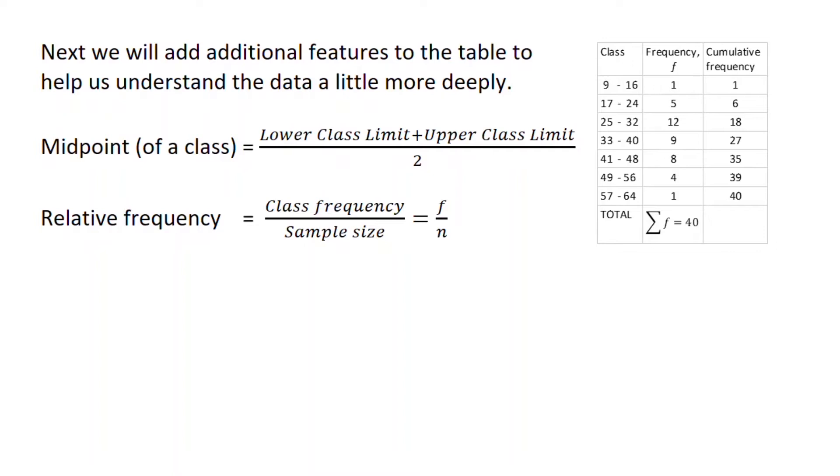The first is the midpoint of the class. So for our first class, which is 9 to 16, our midpoint is 9 plus 16 all divided by 2. 25 divided by 2 is 12.5. And for the next class, 17 to 24, add those together, divide by 2, and that gives me 20.5. Notice the difference between the midpoints is 8, the class width.